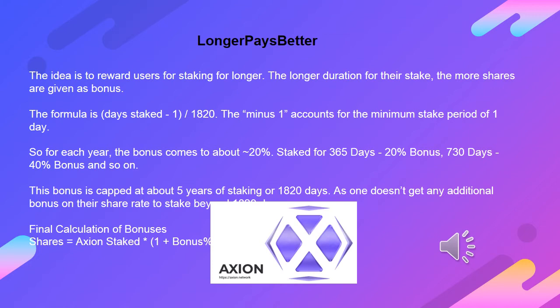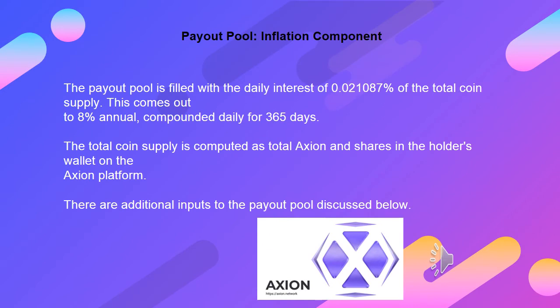One doesn't get any additional bonus on their share rate for staking beyond 1820 days. Final calculation: Shares = Axion staked × (1 + bonus percent from longer pays better). The payout pool is filled with the daily interest of 0.021087% of the total coin supply, which comes out to 8% annual compounded daily for 365 days. The total coin supply is computed as total Axion and shares in the holder's wallet on their Axion platform. There are additional inputs to the payout pool discussed below.